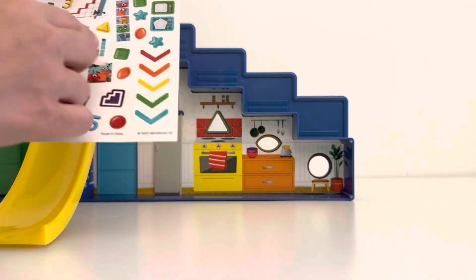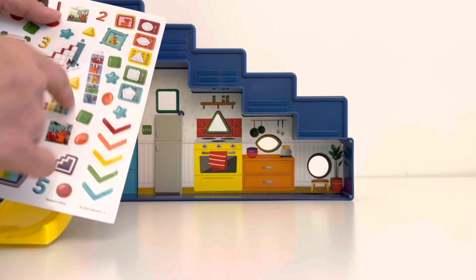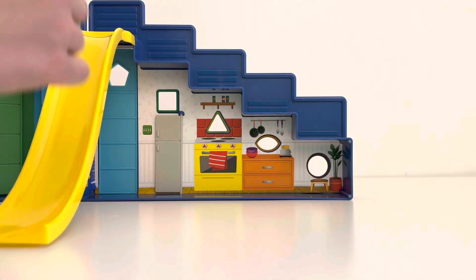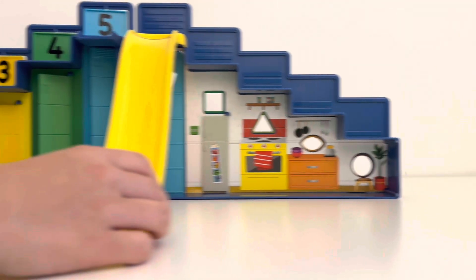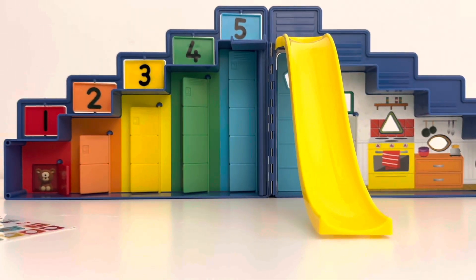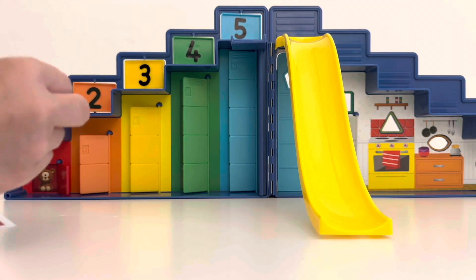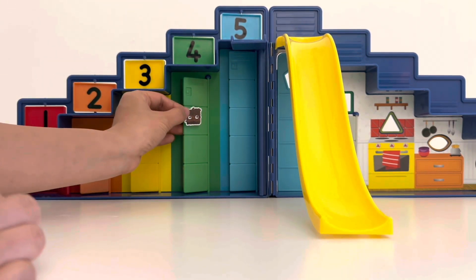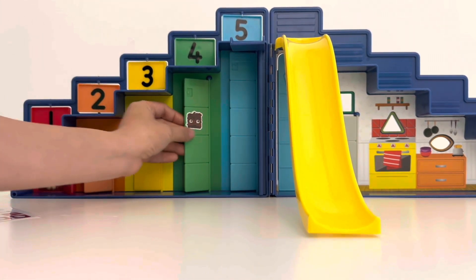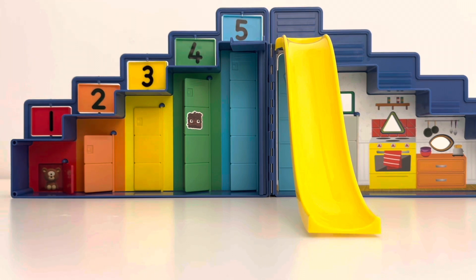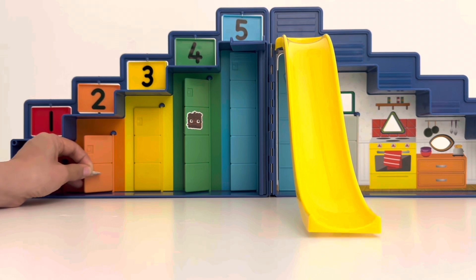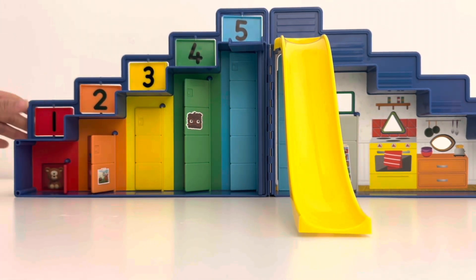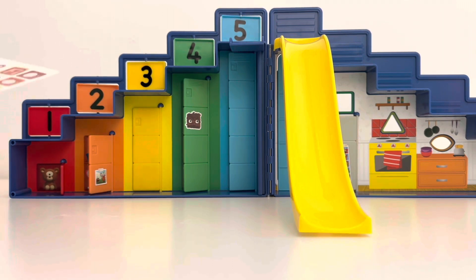Now we can use our stickers to decorate our playset. First I'll pick the photos to add on the fridge. And then let's use some more stickers. How about these photos to decorate the lockers. We've got a picture of squarey on four's locker because that's his pet. And some more photos of one and two. I'll put that on two's locker. They are best friends after all.